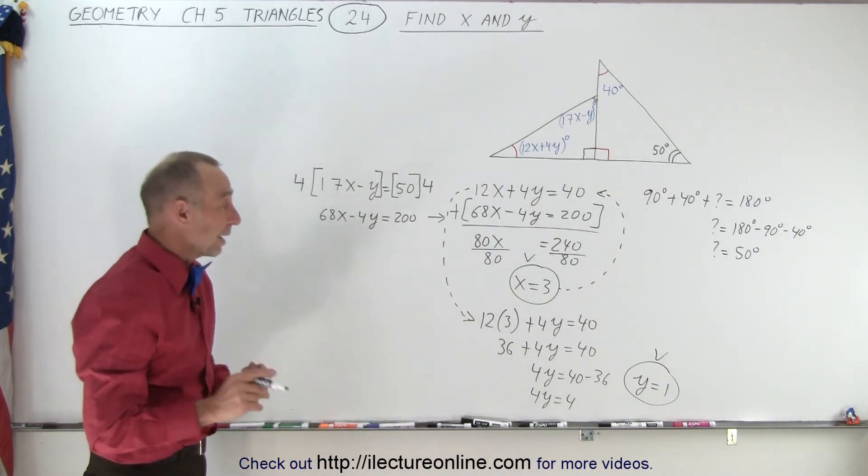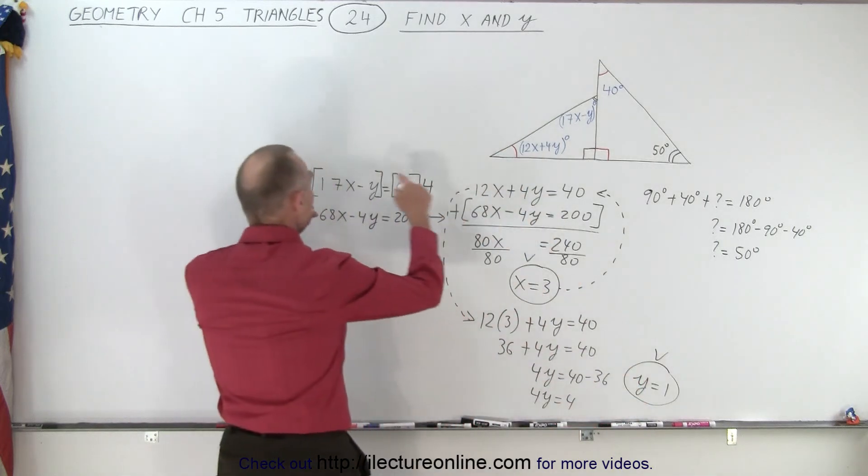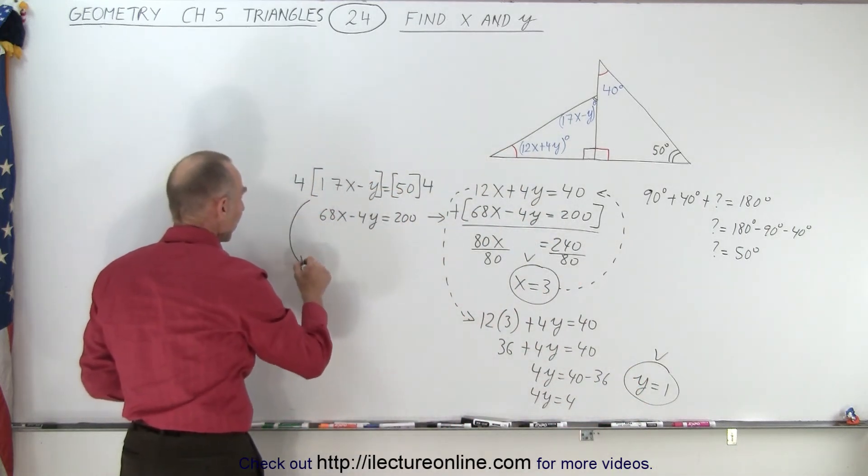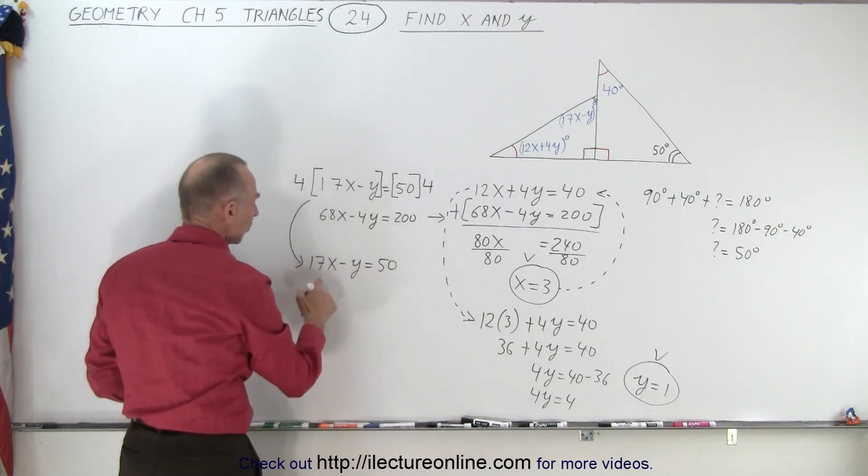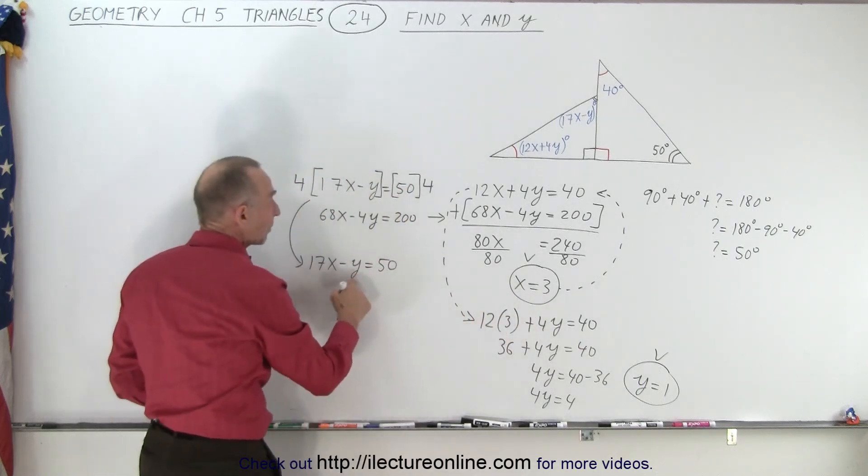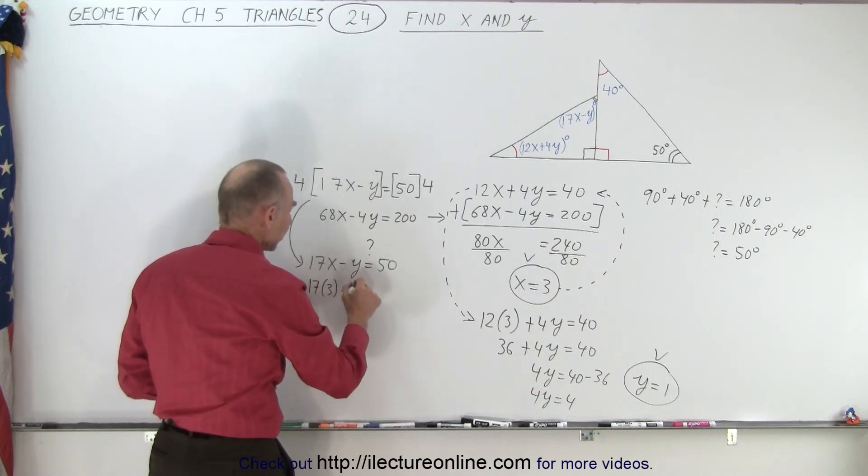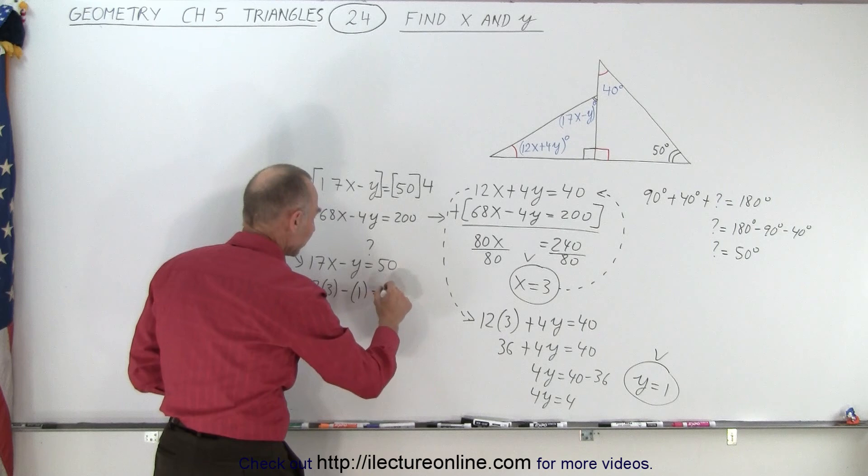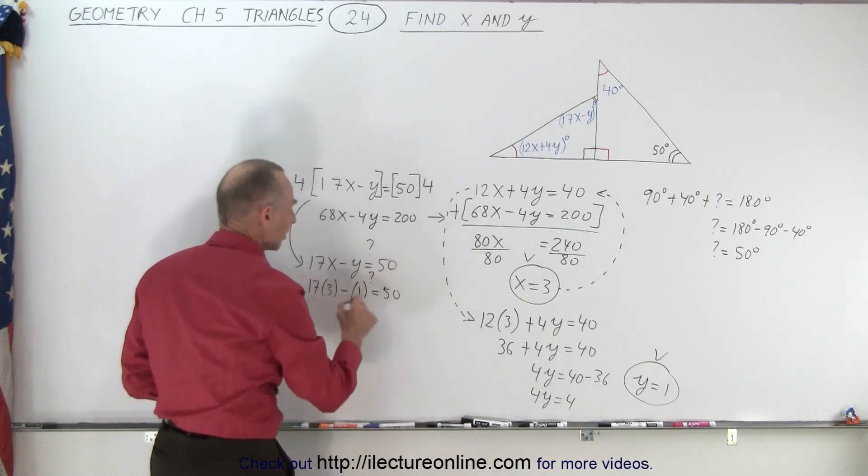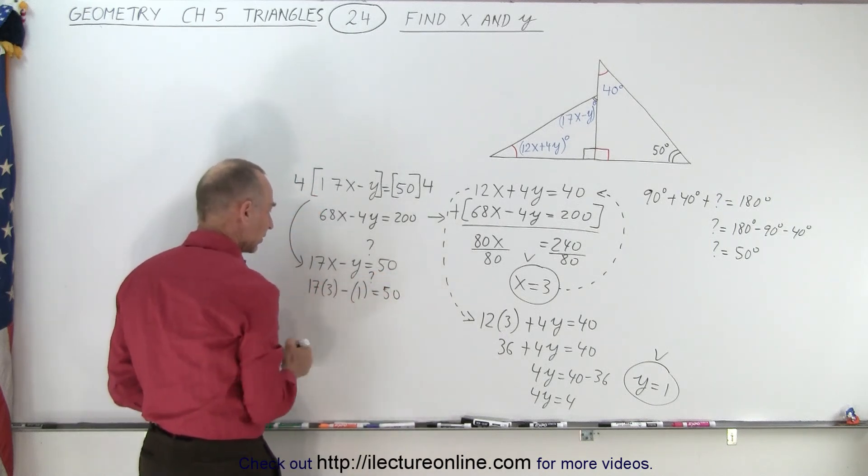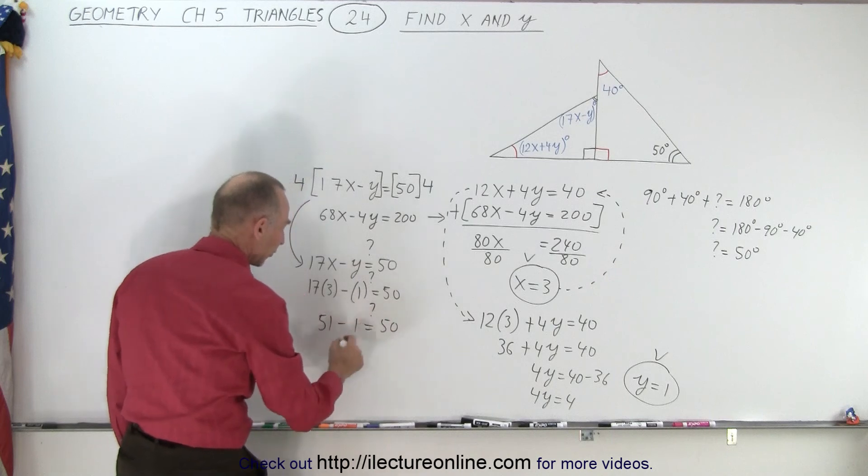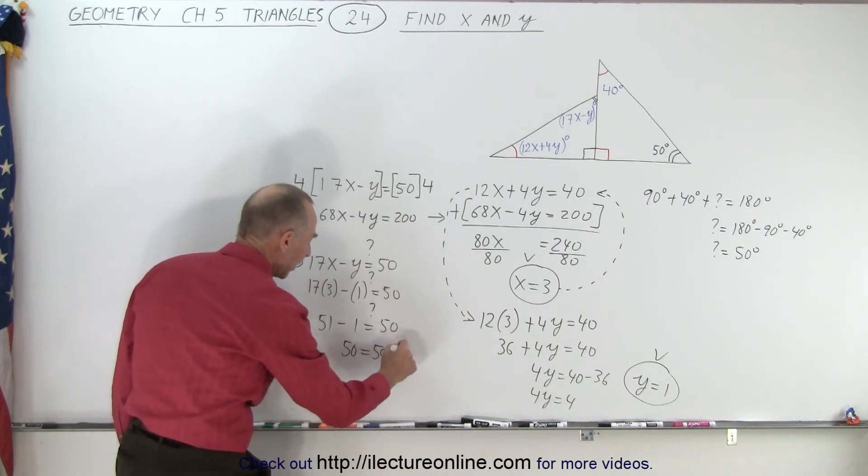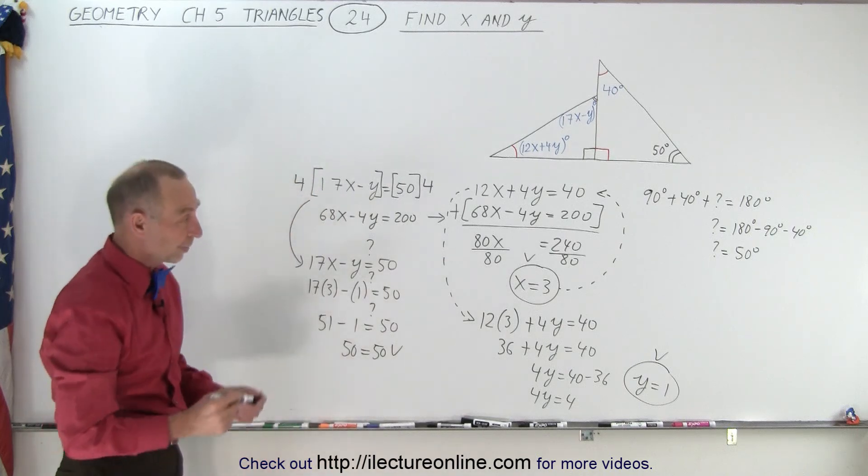If you want to check to make sure you have the correct answer you can take both of these and plug those values into this equation just to see if that is indeed correct. So we have the equation 17x minus y equals 50. So we're going to replace every x by 3 and every y by 1 and see if you get the correct answer. So 17 times 3 minus 1 is equal to 50 question mark. So that's the question. There should be a 50 there. So 17 times 3, that's 51 minus 1 equals 50 question mark. And of course you can now see that 50 is indeed equal to 50, which verifies that those two answers were indeed correct.